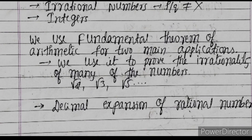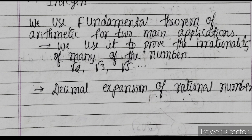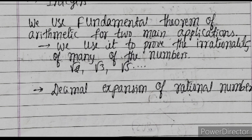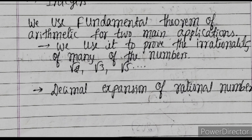We use the Fundamental Theorem of Arithmetic for two main applications. The first is to prove the irrationality of many numbers — for example, irrational numbers such as root 2, root 3, root 5, and root 7. The second application is the decimal expansion of rational numbers.